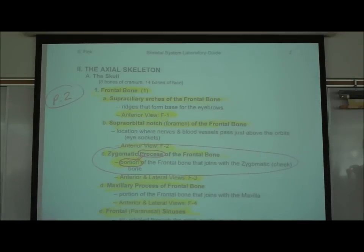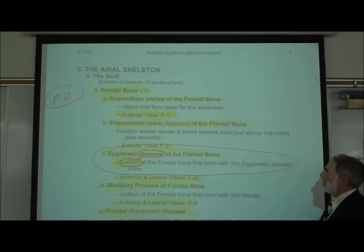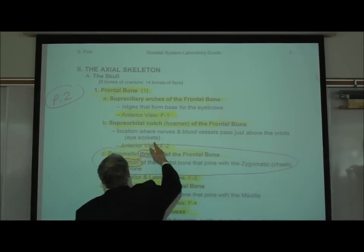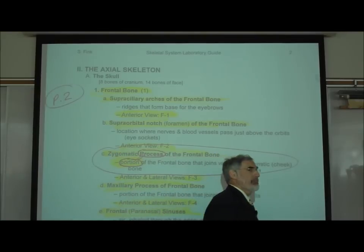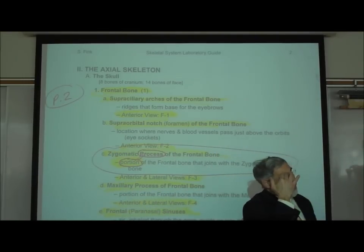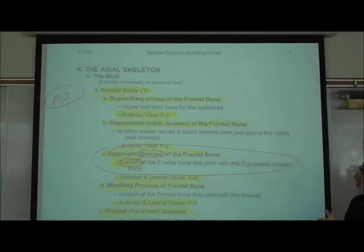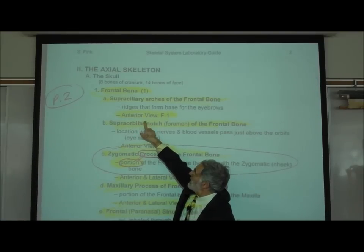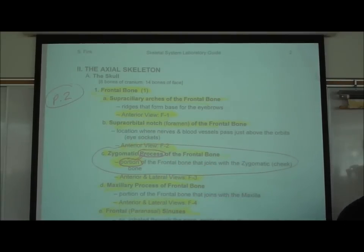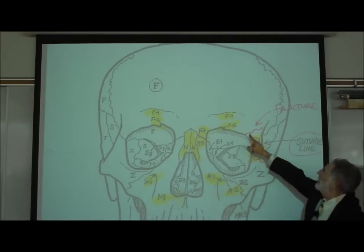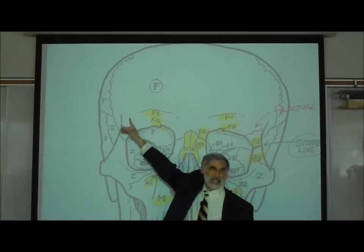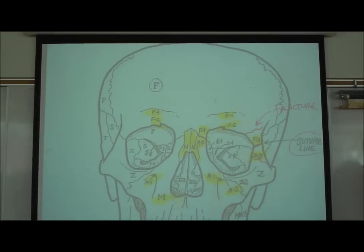The first thing we want you to find on the frontal bone is the supraciliary arches — those are the ridges that form the base for your eyebrows. If you just palpate your own eyebrows, you'll feel there's a ridge. For some people, the ridge is more prominent than in others. You can see it labeled on the anterior view as F1. Looking at the anterior view of Mr. Skullhead, this entire bone right here is F — the frontal bone — and F1 is labeled right there.